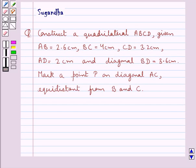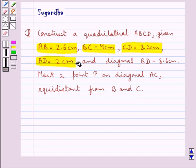Hello and welcome to the session. In this session we discuss the following question: Construct a quadrilateral ABCD giving AB equal to 2.6 cm, BC equal to 4 cm, CD equal to 3.2 cm, AD equal to 2 cm, and diagonal BD equal to 3.6 cm.